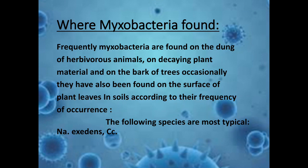Where are Myxobacteria found? Myxobacteria are frequently found on the dung of herbivorous animals, on decaying plant material, and on the bark of trees. Occasionally they have also been found on the surface of plant leaves and in soil. According to their frequency of occurrence, the following species are most typical.